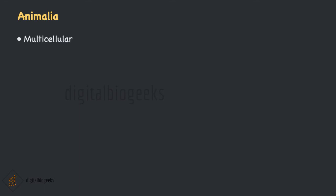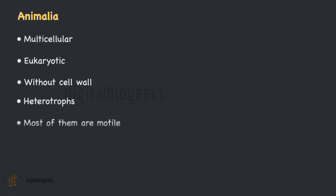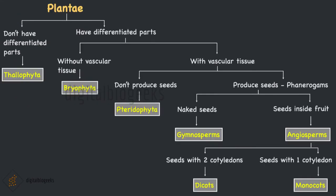Kingdom Animalia includes all multicellular eukaryotic organisms without a cell wall. Plants have a cell wall but animals lack it. They are heterotrophs that depend on other organisms for their survival. Now let's look into the classification table for Kingdom Plantae. Kingdom Plantae is first divided into two: plants that don't have differentiated plant parts, and those that have differentiated parts. The plants which don't have differentiated parts come under Thallophyta.